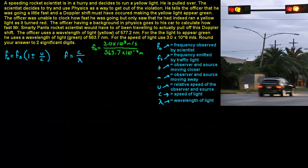And it is negative 9th because nano is obviously negative 9th. So then for f_s, we have got the same thing: 3.0 times 10 to the 8th meters per second divided by 577.2 times 10 to the negative 9th. Remember, this is the traffic light, the frequency of the traffic light. Alright.